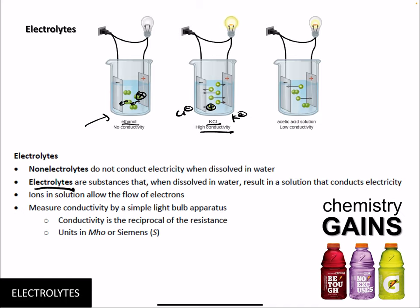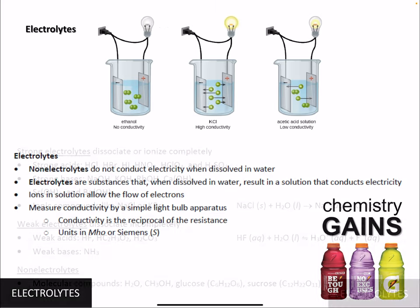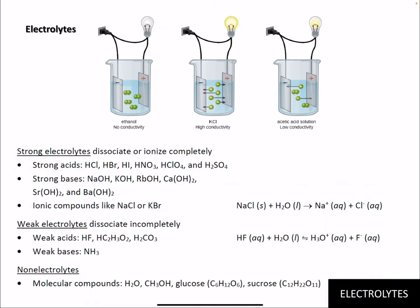If electrons are moving across, the bulb lights up. With a non-electrolyte, no bulb. With an electrolyte it lights up. Some solutions make the bulb less bright — those are weak electrolytes rather than strong electrolytes. Strong electrolytes conduct with many ions; weak electrolytes only form some ions. Conductivity is the reciprocal of resistance; resistance is measured in ohms, so conductivity is measured in mhos or siemens. There are strong electrolytes, weak electrolytes, and non-electrolytes.